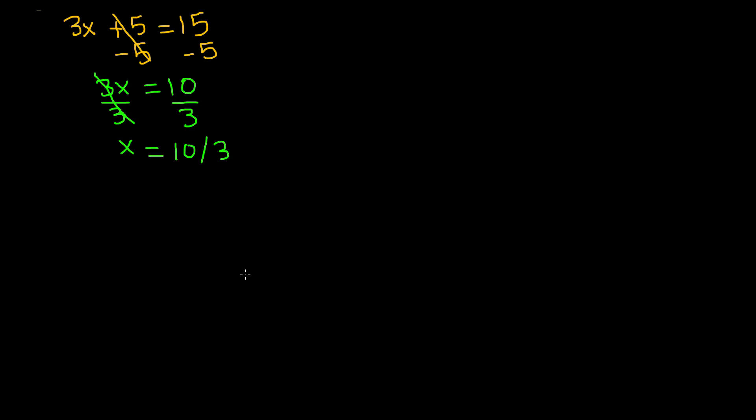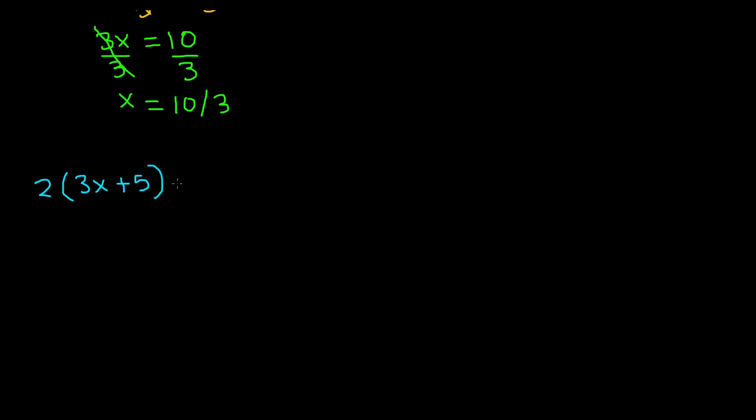Okay, now that we've done our first example, and this one was a pretty simple one, let's go ahead and do a more complex equation. Let's say that we have 2, and then in parentheses we have 3x plus 5, close the parentheses, minus 3 is equal to 9.